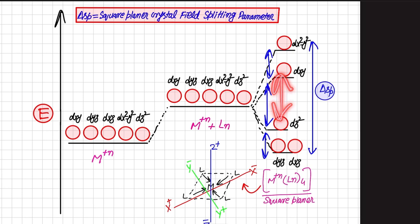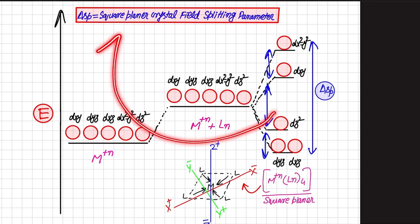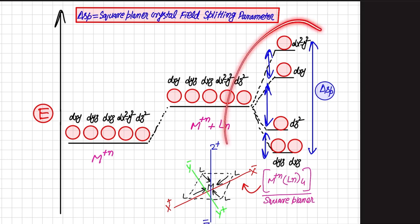Comparing tetragonal and square planar: in tetragonal geometry the second position was occupied by dz² and the third by dxy, but in square planar geometry this is inverted — dxy moves to second position and dz² drops to third. This is the crystal field splitting diagram for square planar geometry. One important thing is that in square planar geometry the overall splitting enhances further — the energy gap becomes wider.